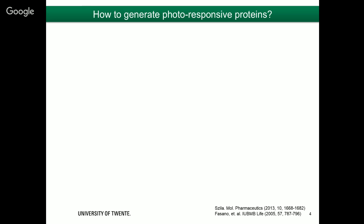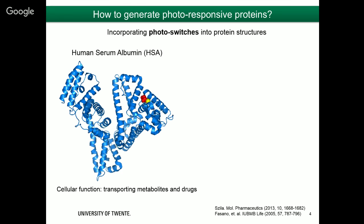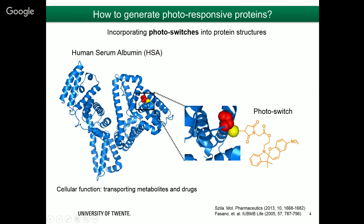How do we generate photoresponsive proteins — proteins that naturally are not photoresponsive? We can do this by incorporating photoswitches into protein structures. Photoswitches are molecules that undergo significant and normally reversible changes upon light irradiation. The changes can be structural, in polarity, or involve bond formation and breaking. One example is azobenzene: in the trans form, UV irradiation bends it into the cis form, and this is reversible with irradiation at a different wavelength.